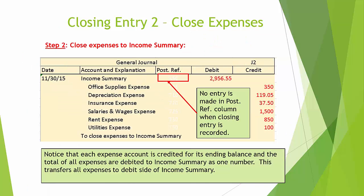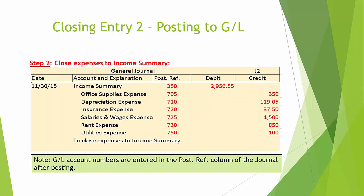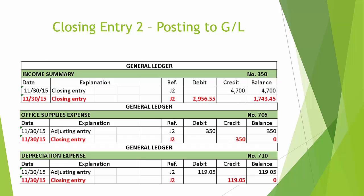Here is the closing entry for step 2. Notice there is no entry in the posting reference column of the journal before posting. Here is the journal entry after each debit and credit has been posted to the ledger. Note that the general ledger account numbers are entered in the posting reference column of the journal after posting.